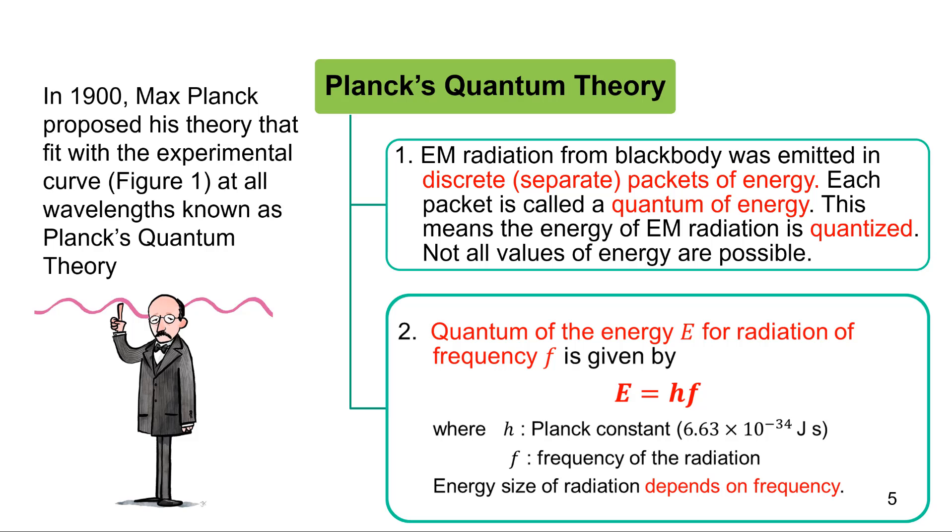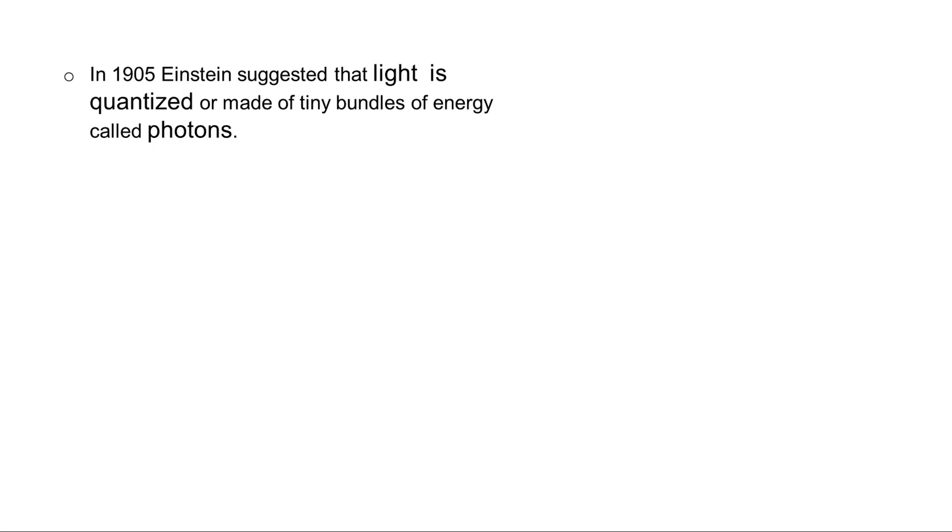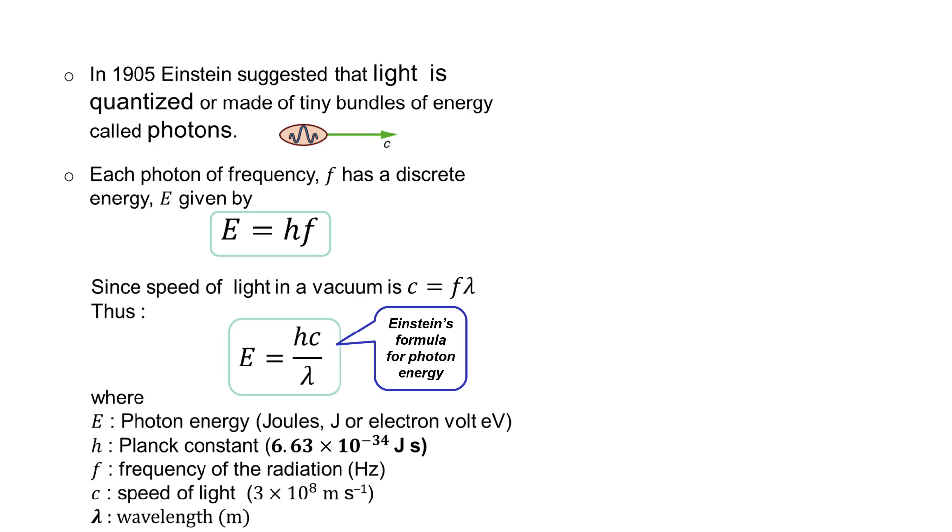The next discovery is done by Einstein in 1905, where he suggested that light is quantized, or made of tiny bundles of energy, and it's called photons. And again, Planck's quantum theory comes to rise, E equals to HF.